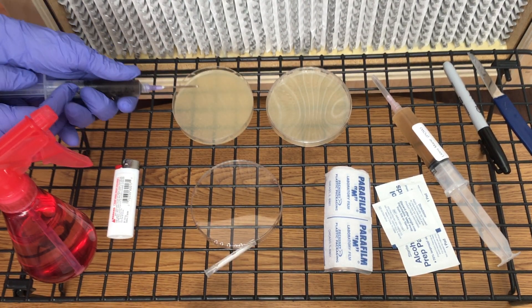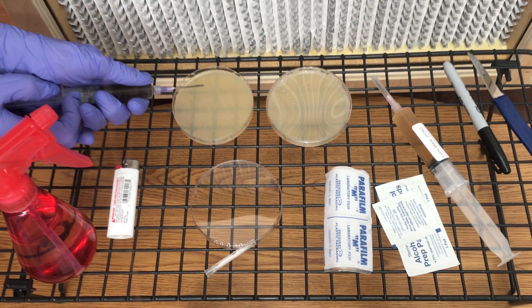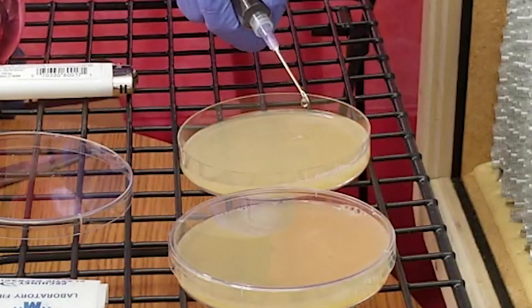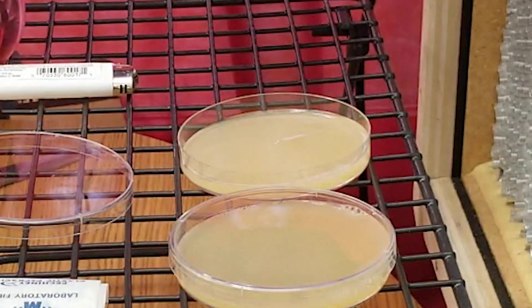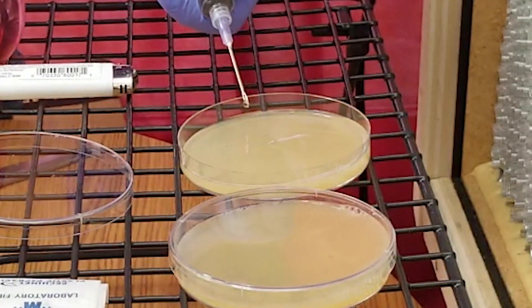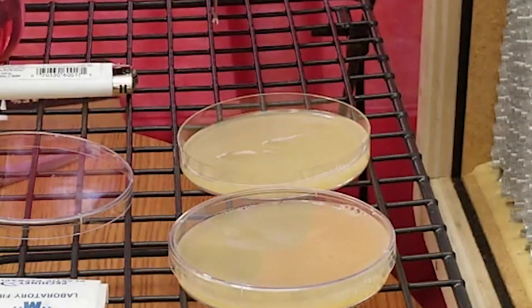Shake the syringe one last time and then squirt a few drops of spores onto the agar. You don't need that much spores, just a few drops will do, but I do like to be able to see a few specks of spores on the agar.